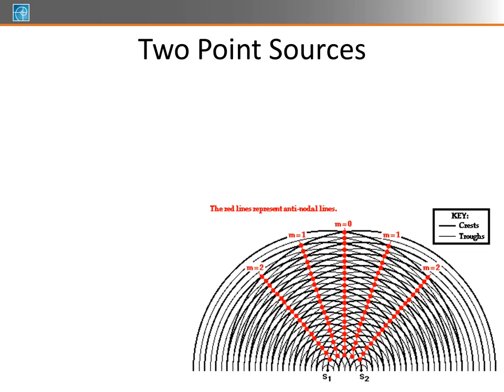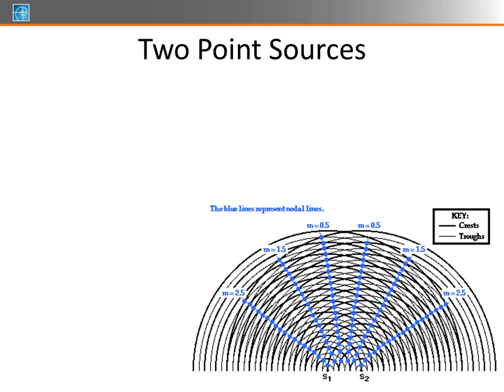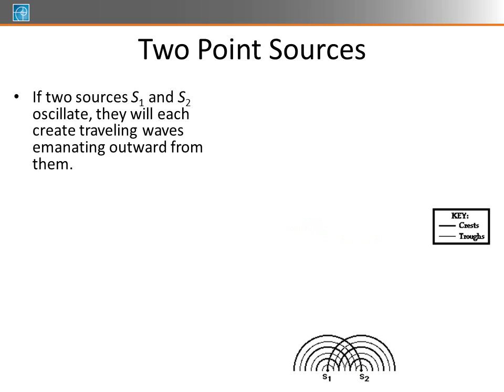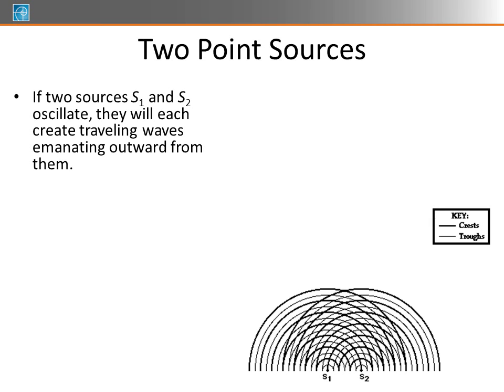So we can start coming up with different number of points, and this animation is going through a lot of these different scenarios. But what we want to do is look at when do we have a crest showing up with another crest. And if a crest shows up with a crest, or similarly, if a trough shows up with a trough,